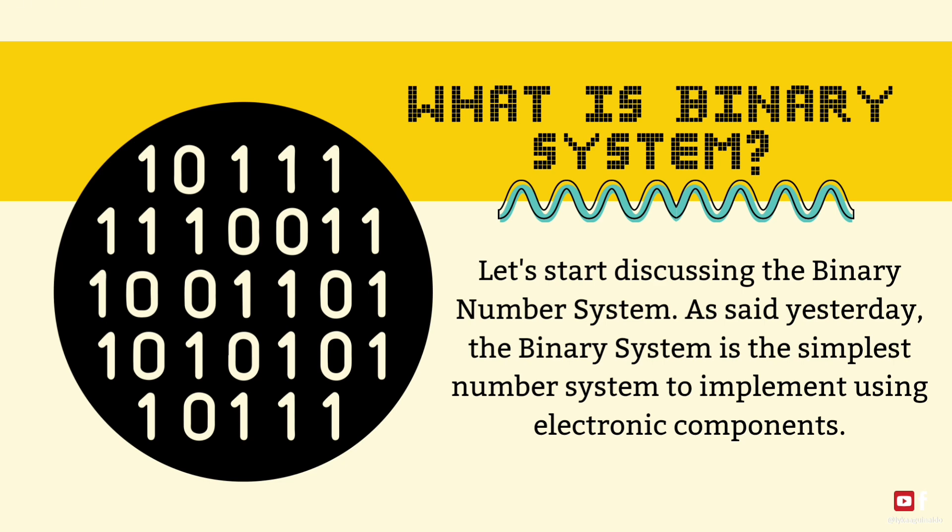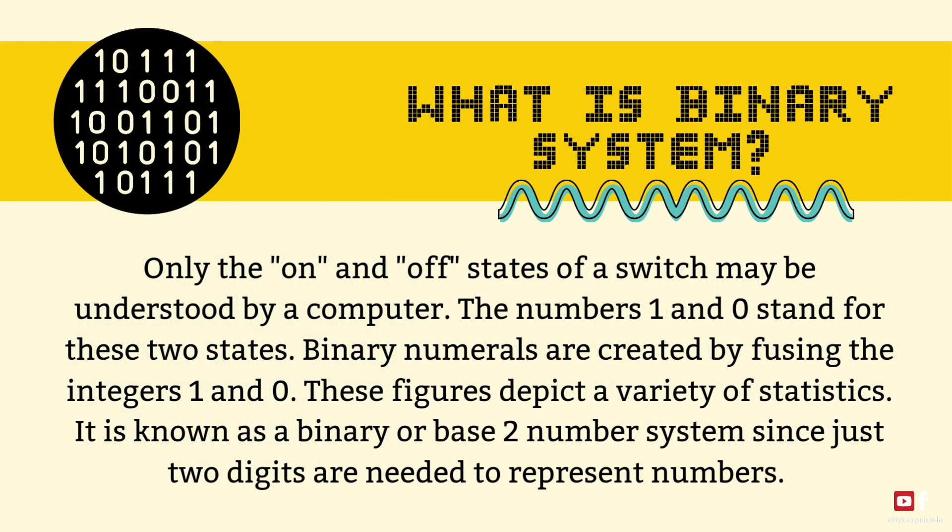The binary number system, as said yesterday, is the simplest number system to implement using electronic components. Only the on and off states of a switch may be understood by a computer. The numbers one and zero stand for these two states.